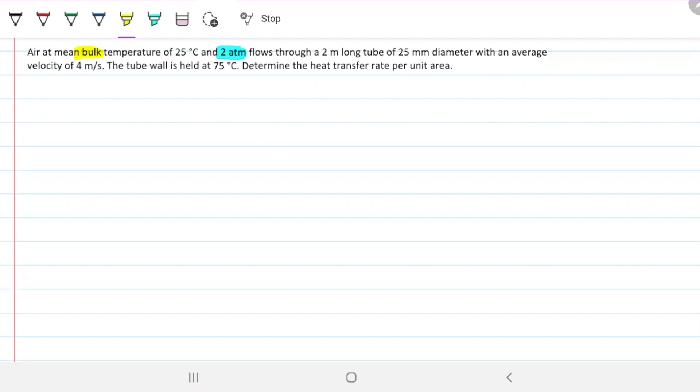Flows through a two-meter-long tube of 25 mils diameter with an average velocity of four meters per second. Tube wall is 75 Celsius. Determine the heat transfer rate per unit area. So heat transfer rate per unit area, we know this guy very well, this is small q, or just q over A, and it's just watts over meters squared.